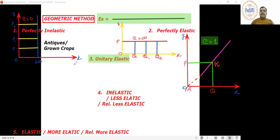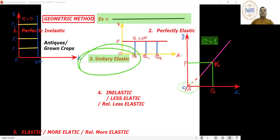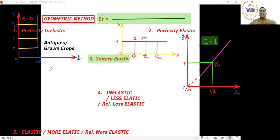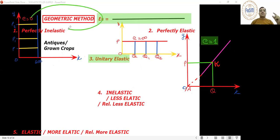So if you draw an upward-rising supply curve and extend it backward — like pulling the tail — and if the tail touches the origin, then that is called unitary elastic.